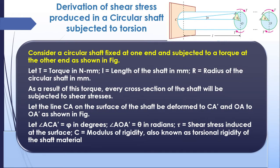Now we are going to derive the shear stress produced in a circular shaft subjected to torsion. Here you can see a shaft — one end is fixed and the other end is free, and we are applying a twisting moment, which forms a couple. Points A and C are the original positions of the shaft. When we apply a twisting force, the position changes from A to A-dash — this dislocation is taken as deformation.